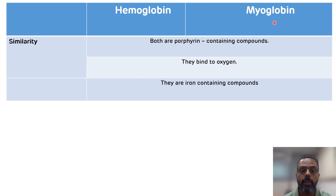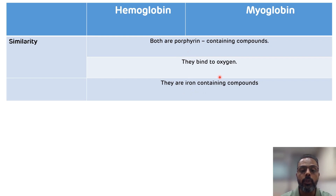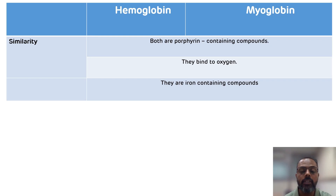Hemoglobin and myoglobin both are porphyrin and iron-containing compounds, and they both bind to oxygen. That is the similarity. Now we will see the differences between hemoglobin and myoglobin.